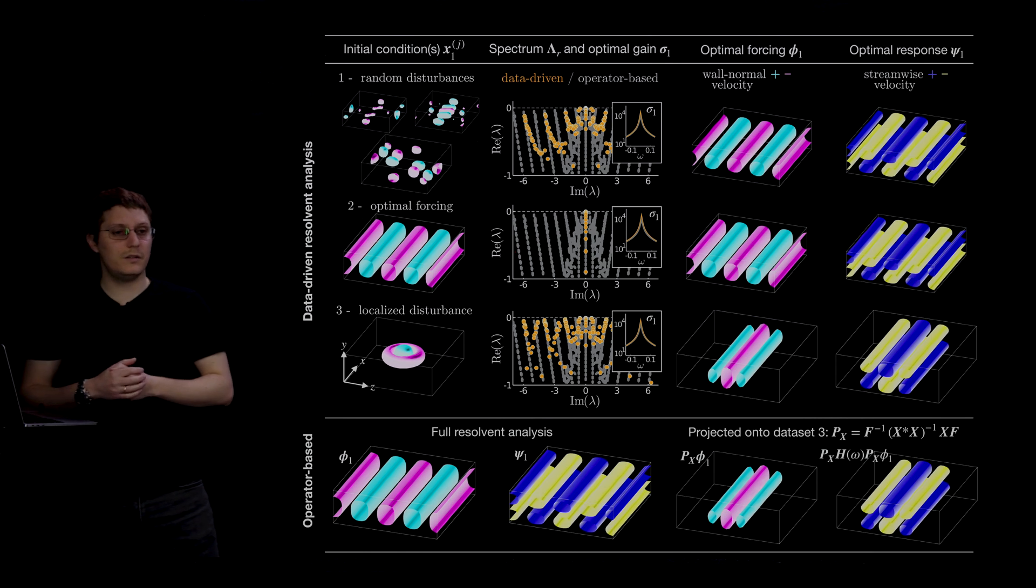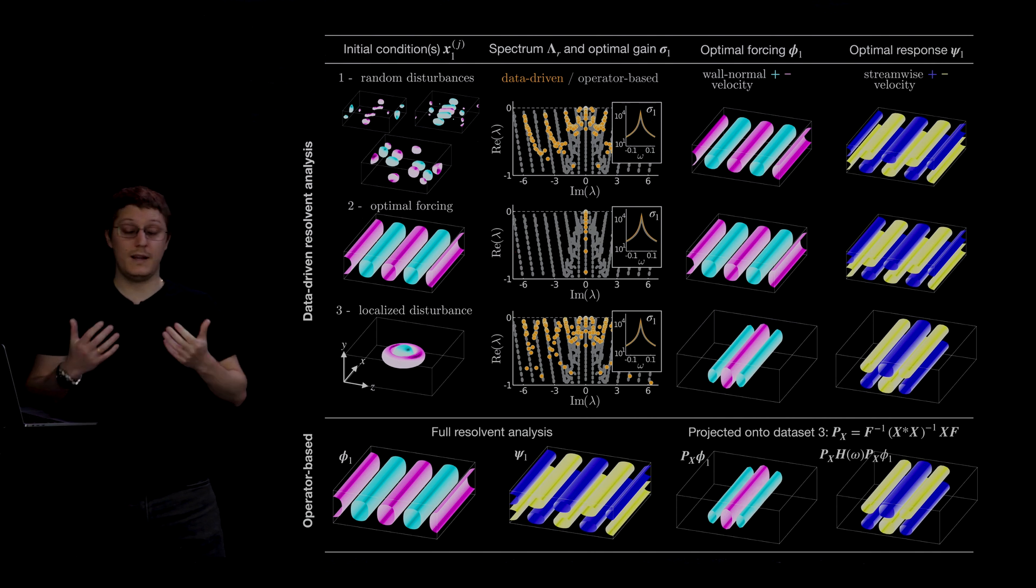It turns out that if we do an operator-based resolvent analysis, but where we restrict the input and output spaces to be in the span of the data snapshots, then we get the same modes.